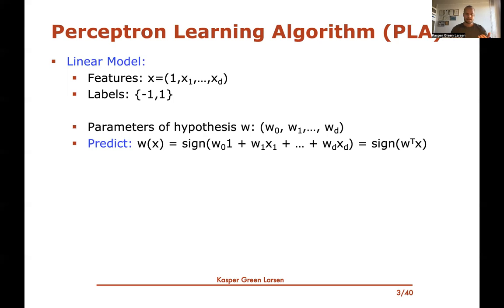With this definition of input we search for a hypothesis which is a linear model defined by d+1 weights w0 up to wd. For any given choice of these parameters, you make predictions by evaluating the inner product between the feature vector x and the weight vector w, then taking the sign. Positive inner product predicts plus one; negative predicts minus one.